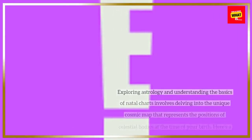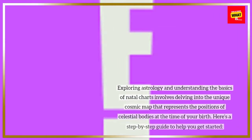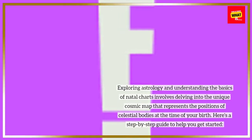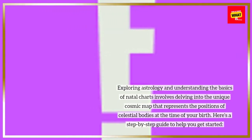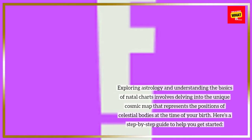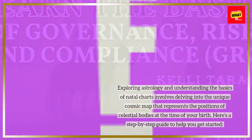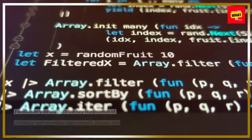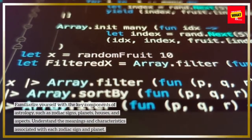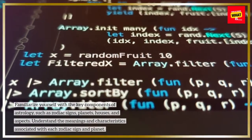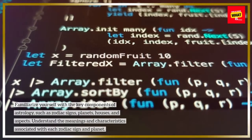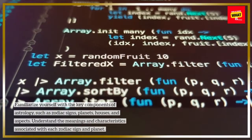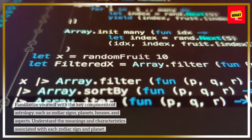Exploring astrology and understanding the basics of natal charts involves delving into the unique cosmic map that represents the positions of celestial bodies at the time of your birth. Here's a step-by-step guide to help you get started. Step 1: Learn the basics. Familiarize yourself with the key components of astrology, such as zodiac signs, planets, houses, and aspects. Understand the meanings and characteristics associated with each zodiac sign and planet.